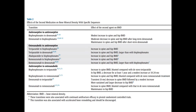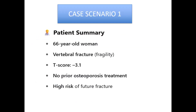Denosumab to romosozumab increases spine BMD but blunted compared to de novo romosozumab, with maintenance in hip BMD. These are the effects of second medications on BMD with specific sequences, which we need to keep in mind to help solve the case scenarios coming up.